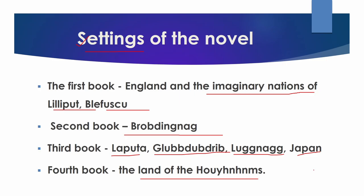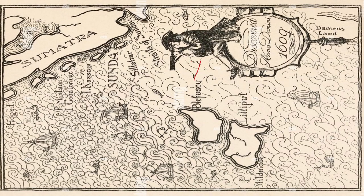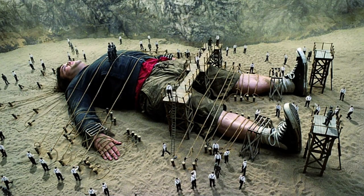Lemuel Gulliver is a married surgeon from Nottinghamshire, England, who has a passion for travelling. In his voyage to the south seas, he is caught in a storm and washed ashore on an island — Lilliput — which has a population of tiny people about six inches tall. They capture Gulliver as he sleeps and attack him with bows and arrows when he tries to break free. When Gulliver promises not to harm the Lilliputians, they bring him food and drink and take him to their capital. After he agrees to assist them with civil duties and in war, the Lilliputians set him free and give him plenty to eat.